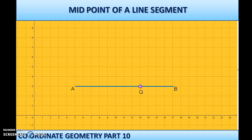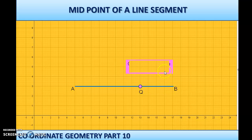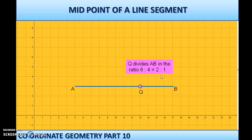To find the ratio for Q, count the number of units to the left and right. From A to Q it is 8 units, and from Q to B it is 4 units — ratio 8:4. Cancelling 4 as a common factor gives 2:1.